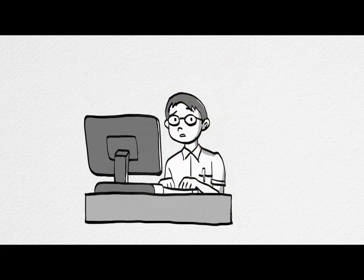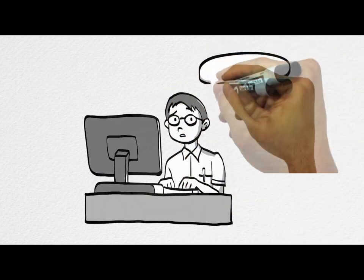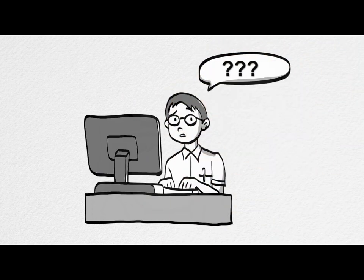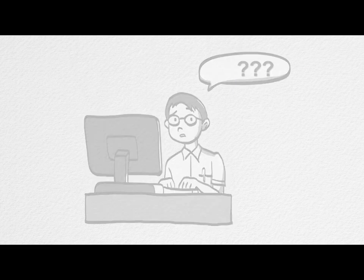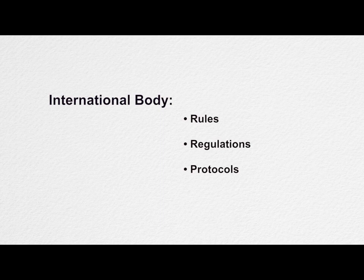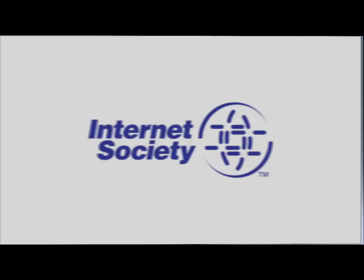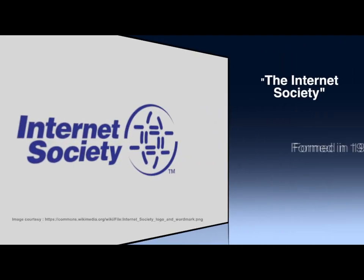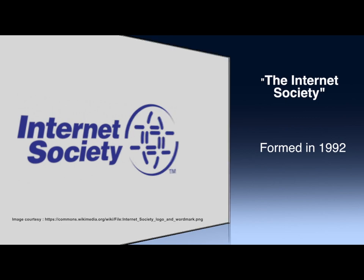You must be surprised how such a large network, spread across the continents, can run without any problem. To monitor such a large network, we require an international body that can frame the rules, regulations, and protocols to join and use this network. Therefore, an international organization known as the Internet Society was formed in 1992 to take care of such issues.